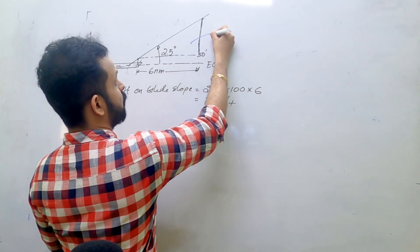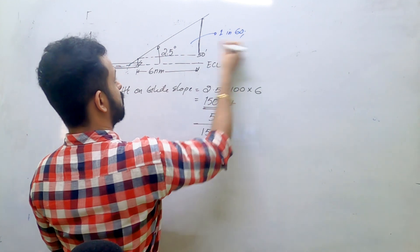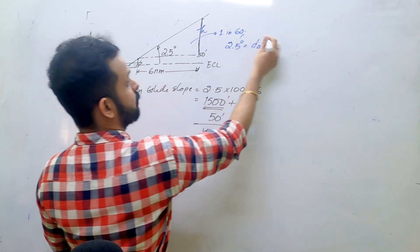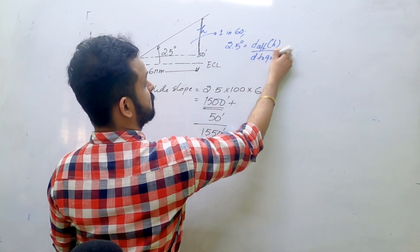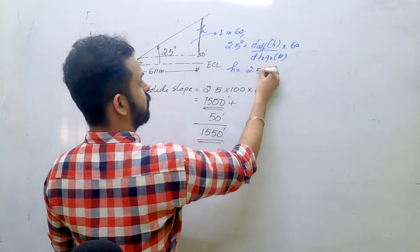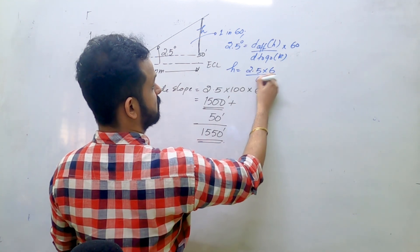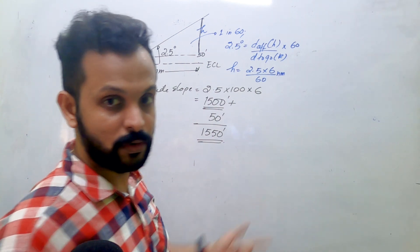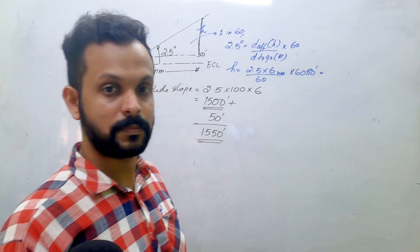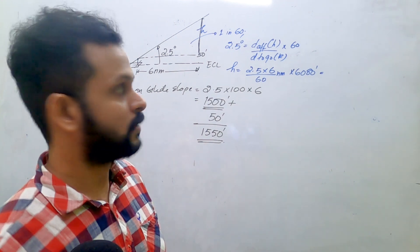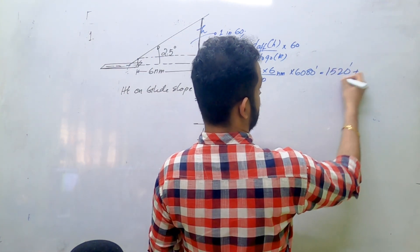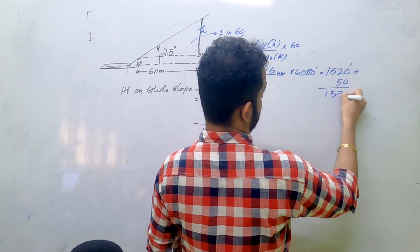You can also do this using the 1/60 rule. At 2.5 degrees, height equals the glide slope multiplied by the range divided by 60. So that's 2.5 into 6 divided by 60, which gives you height in nautical miles. Converting using 6080 feet per nautical mile gives approximately 1520 feet. Adding the ILS reference of 50 gives you approximately 1570 feet.